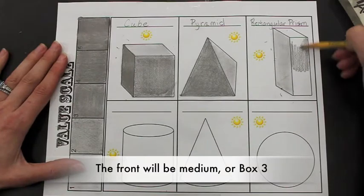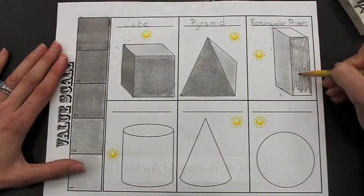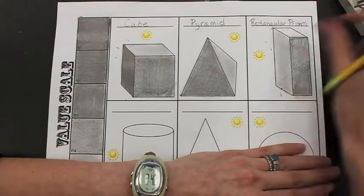Just like the cube, the front will be medium, or box 3. Make sure you fill it in even and solid and go back and smudge.